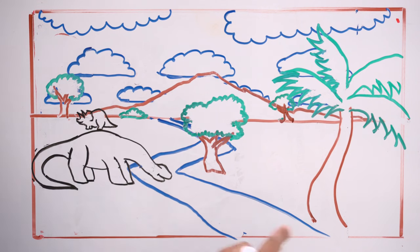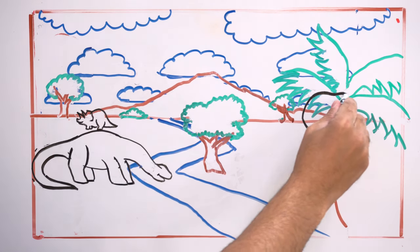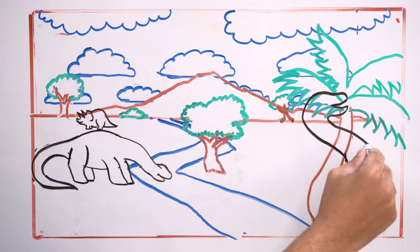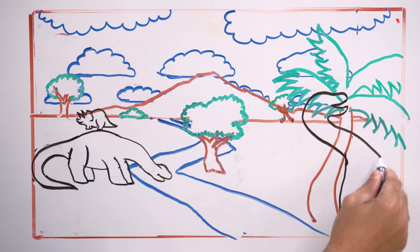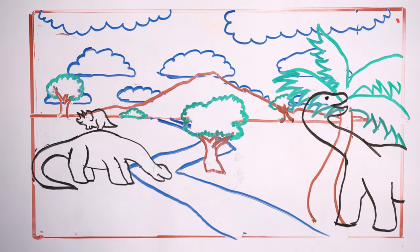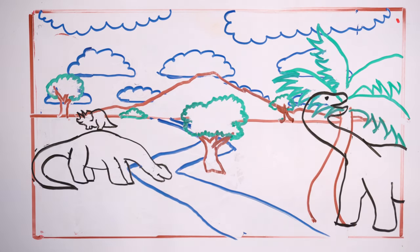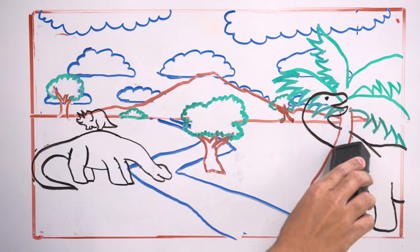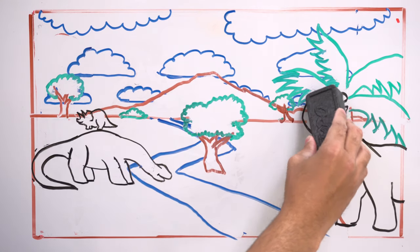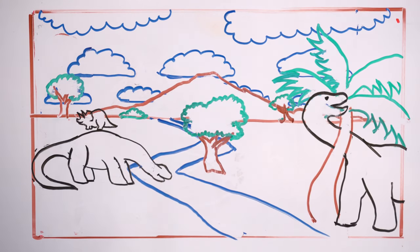Foreground. Big huge brontosaurus overlapping the palm tree here or the coconut tree whatever. Let's erase what's inside the coconut tree. That way it looks like the neck is going around.